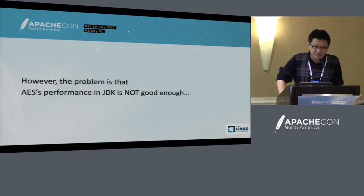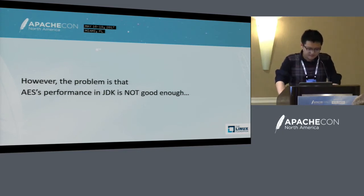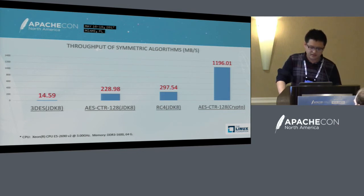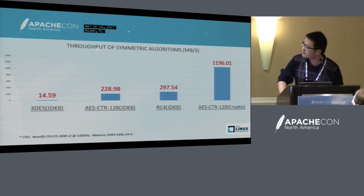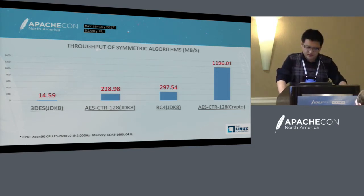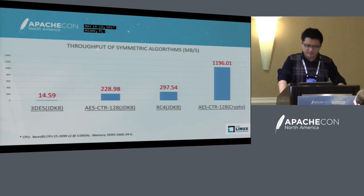Let's look at the benchmark numbers. Here is the throughput of the symmetric encryption algorithms. From this chart, we can see that Triple DES is very slow. RC4, which is famous for its speed, is a bit faster than AES in JDK 8. However, we can clearly see that the performance of AES in Commons Crypto is outstanding — it can be more than one gigabyte per second, about four times faster than RC4.